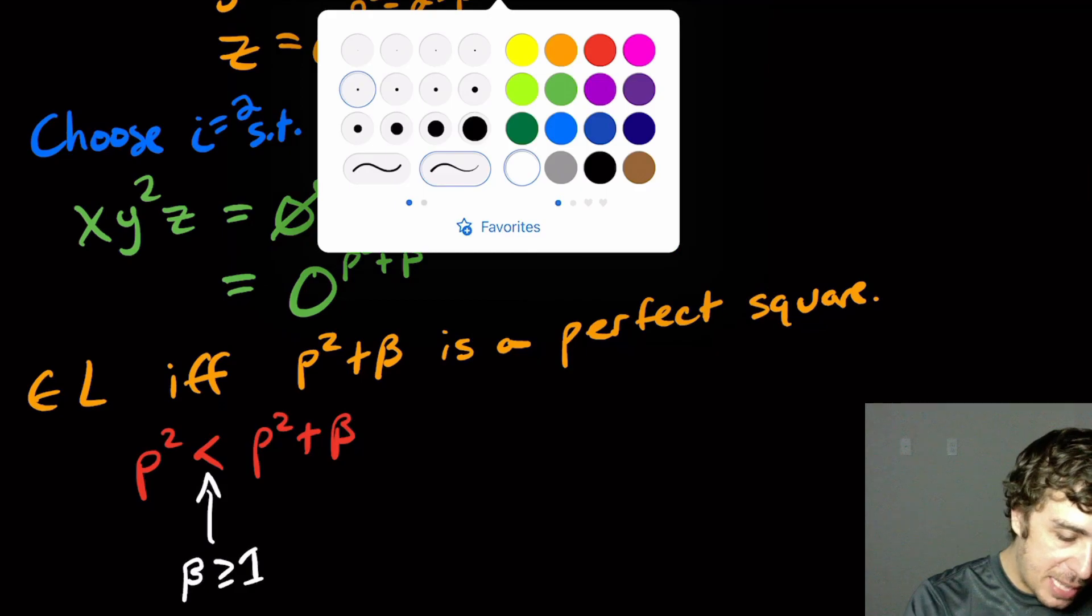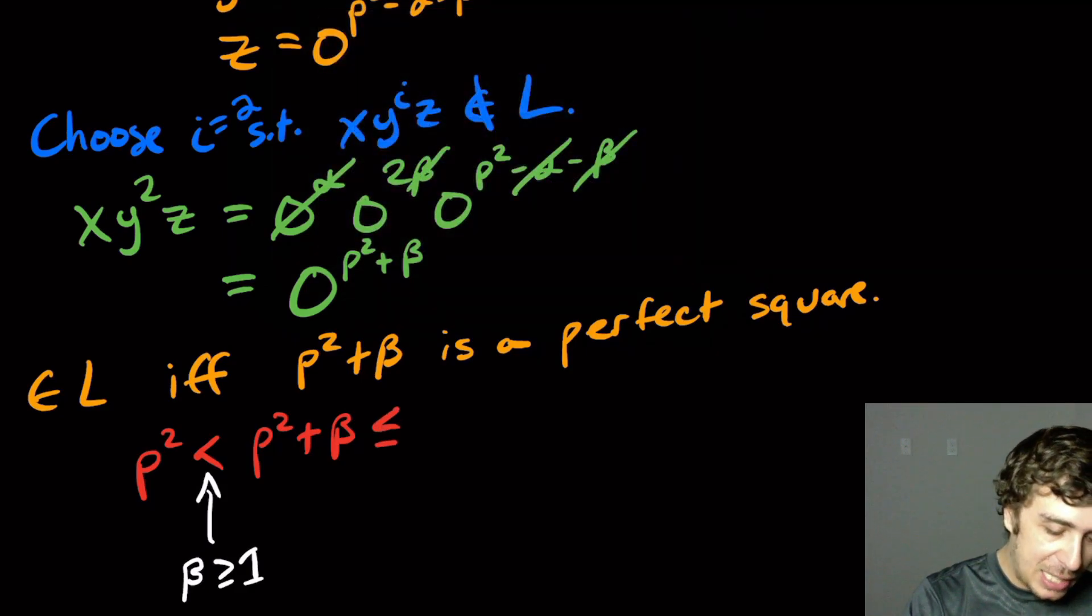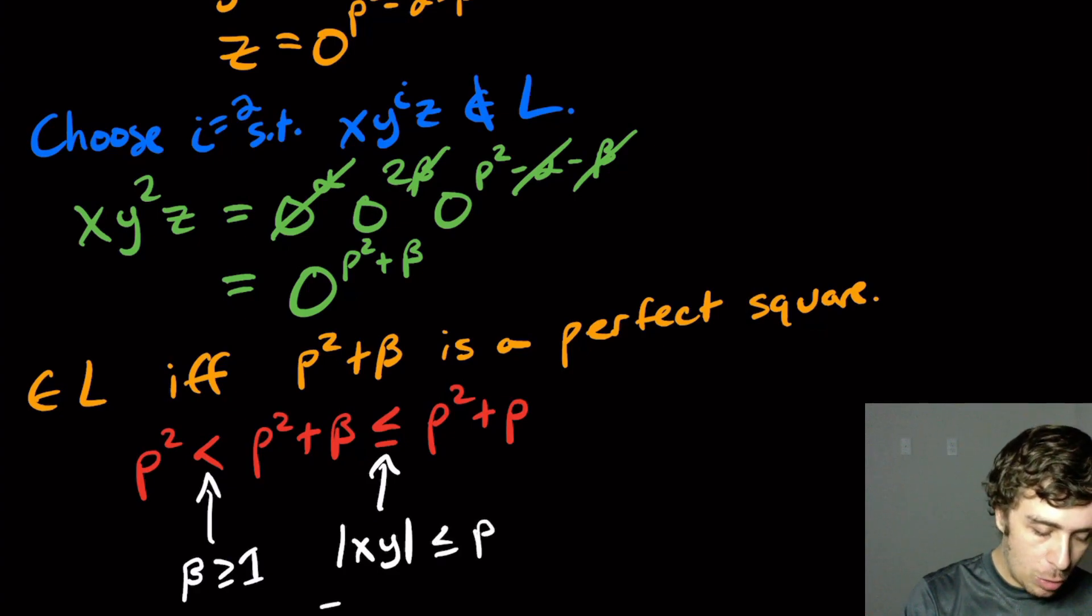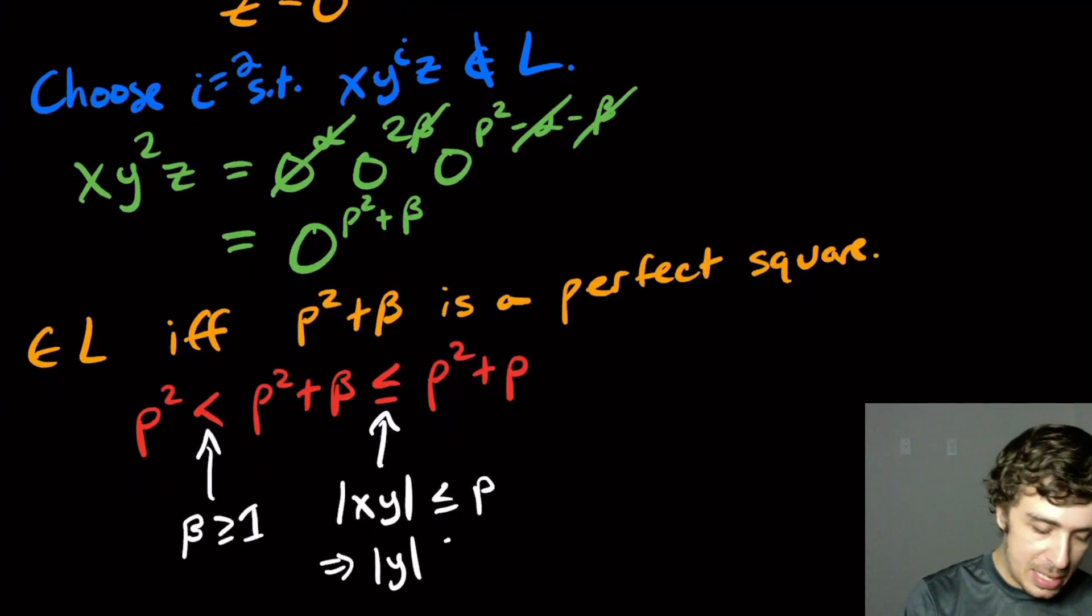But it turns out that this thing is always at most p squared plus p. And how do I know that? Well, I know, let's put it below. I know that because the length of x, y, whole thing is at most p, which implies that the length of y is at most p.